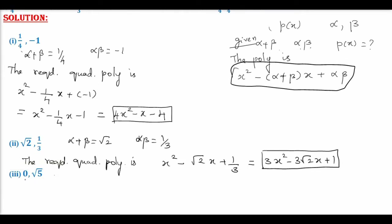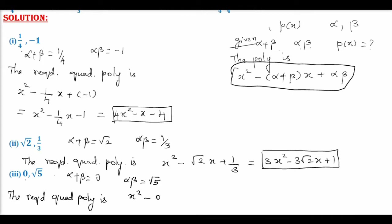Let's move on to the third subdivision. The numbers given are 0 and √5, that is the sum of zeros is 0 and the product of zeros is √5. Therefore, the required quadratic polynomial is X square − 0 · X + √5, which simplifies to X square + √5. So this is the required polynomial.